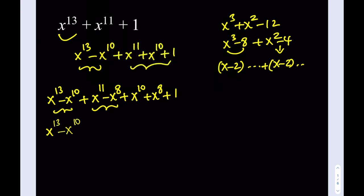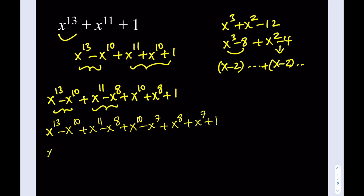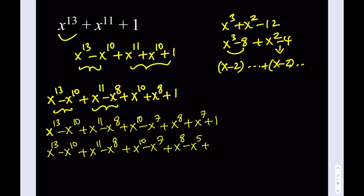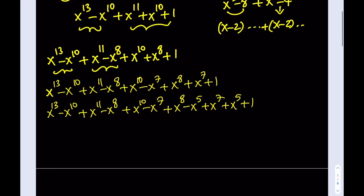My next step is going to be breaking this down even more. I'll take the x to the 10th and write it as minus x to the 7th, and then I'll use x to the 8th plus x to the 7th plus 1, and continue doing this. x to the 13th minus x to the 10th, plus x to the 11th minus x to the 8th, plus x to the 10th minus x to the 7th, plus x to the 8th minus x to the 5th. Maybe you've already seen what I'm doing so far. Notice that I'm getting groups of 2 here which are factorable, and they all have the same factor. But we always have 3 terms left at the end, so we have to figure that out.